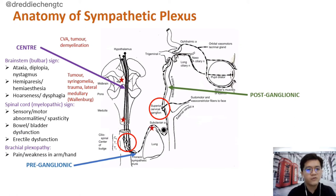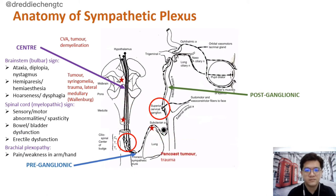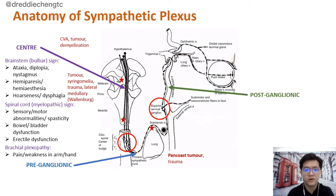For a patient with a second-order neuron lesion, it can happen at the apex of the lung, which can be due to a Pancoast tumor or trauma over the supraclavicular region. Bear in mind, in a patient with a history of chronic smoking presenting with Horner's Syndrome, you should suspect a Pancoast tumor.